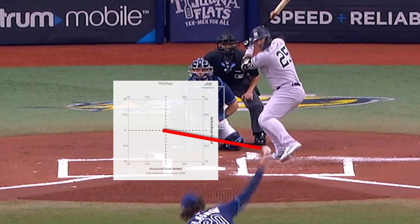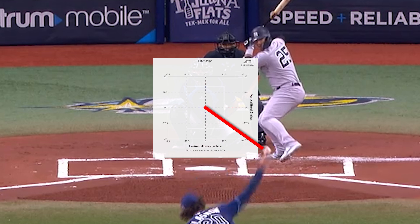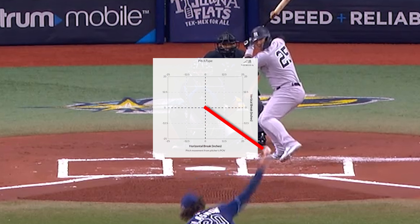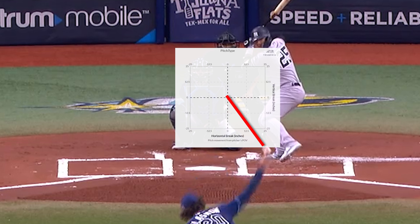When you hear that a slider backs up, an analyst or player isn't actually talking about the pitch moving to the pitcher's arm side. The more accurate description is that the end of that laser sight shifted at release, and the pitch moved normally — instead of ending up on the outer third, it ended up in the middle of the plate. In other words, a backup slider is just a missed-location slider. It's not actually moving any differently.